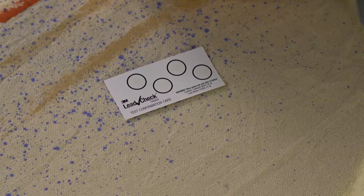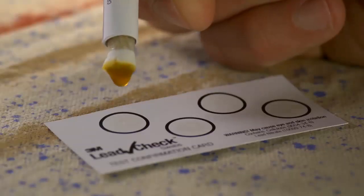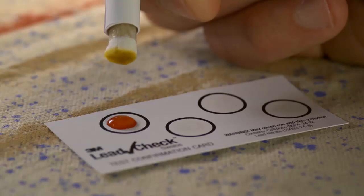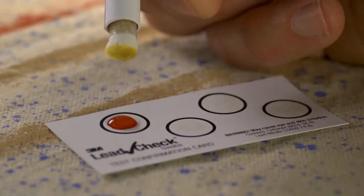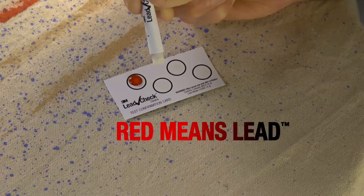If the test is negative, confirm the reactivity of the 3M Lead Check reagent by squeezing a drop of the reagent liquid onto one of the test confirmation cards. The circle should instantly turn red. Don't forget, red means lead.